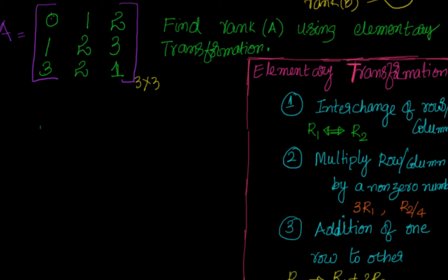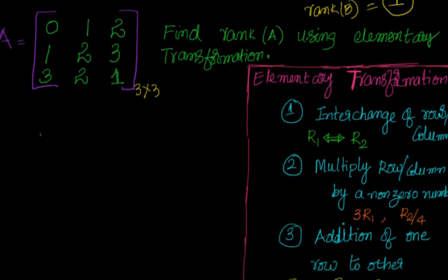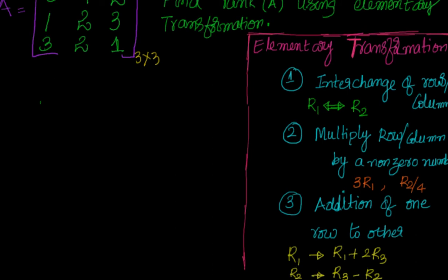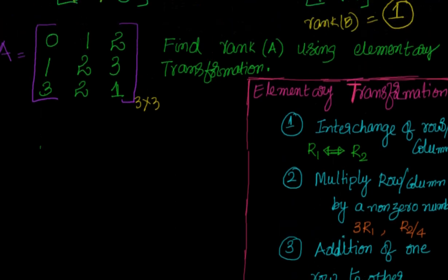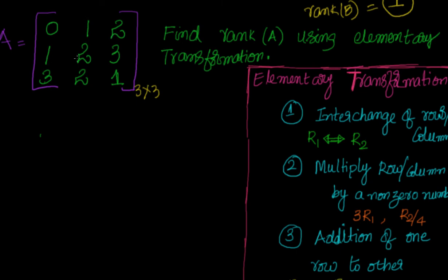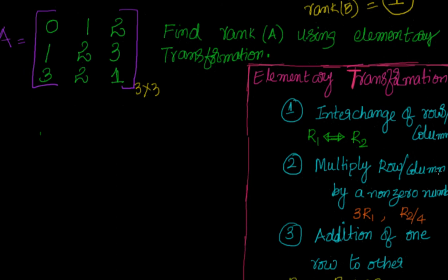As part of elementary transformations, you can do three things: one, you can interchange rows — making R1 become R2, or C1 become C2; two, you can multiply a row by a nonzero number; and three, you can add a multiple of one row to another — for example, R1 = R1 + 2R3, or R2 = R3 minus R2, or R1 minus 3R3. This example is simple enough to do without elementary transformations, but let's use it to understand the concept.